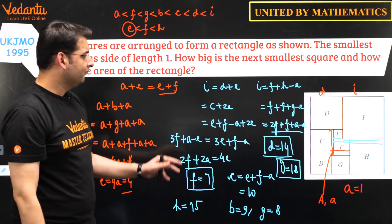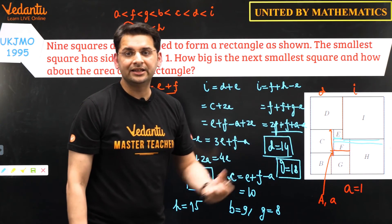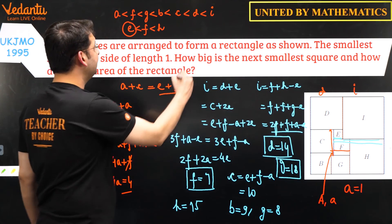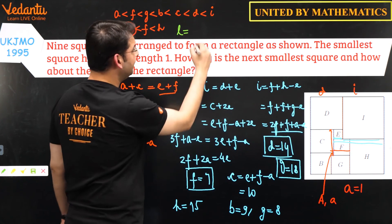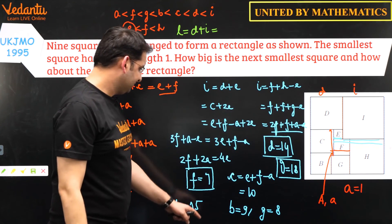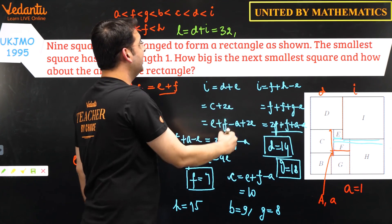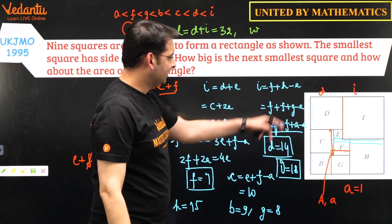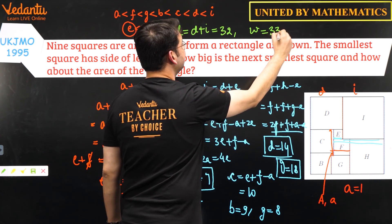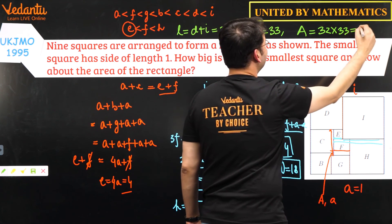Now we have found all the side lengths of all nine squares. The length of the rectangle is d + i = 14 + 18 = 32, and the width is i + h = 18 + 15 = 33. Therefore, the area of the rectangle formed is 32 × 33 = 1056.